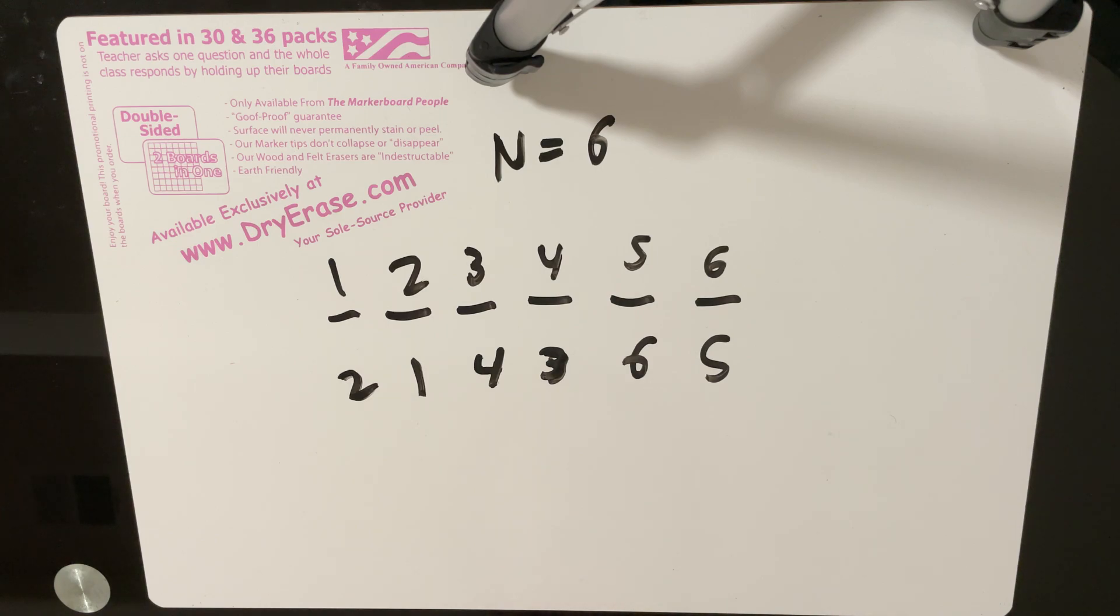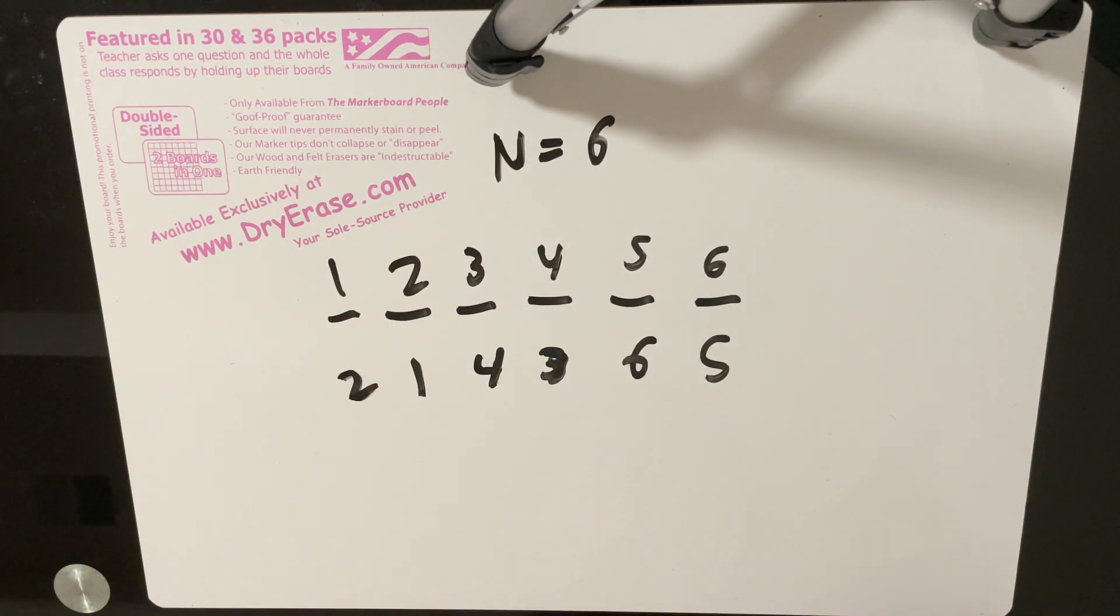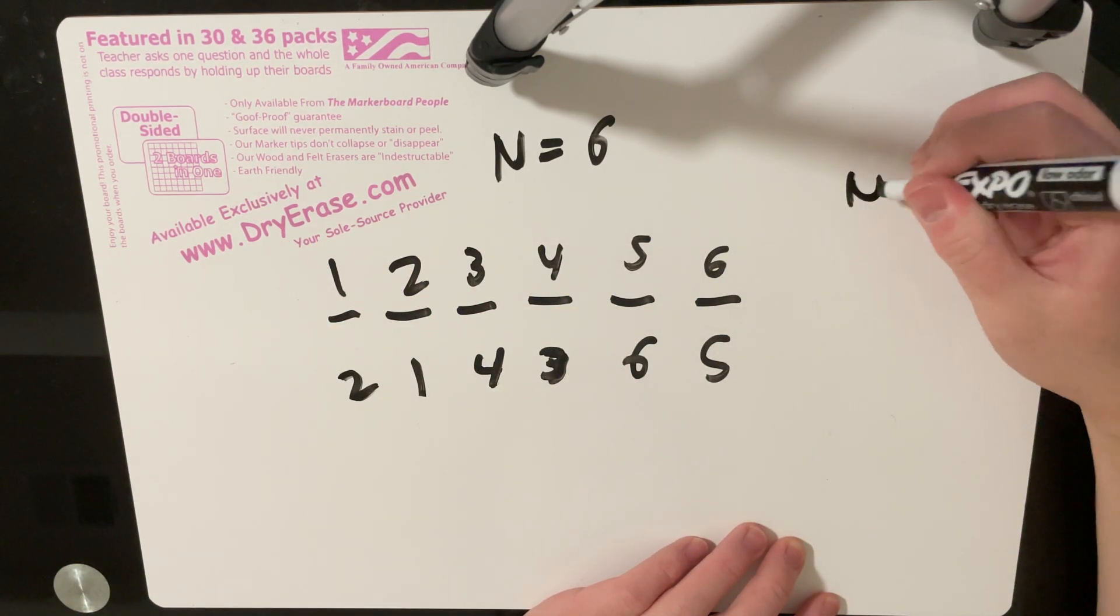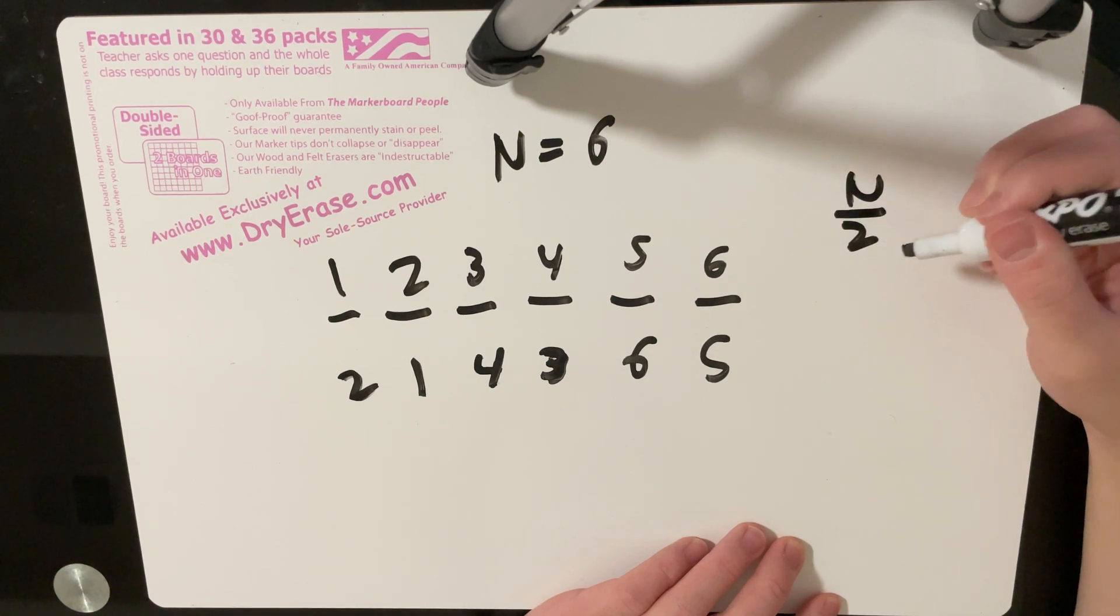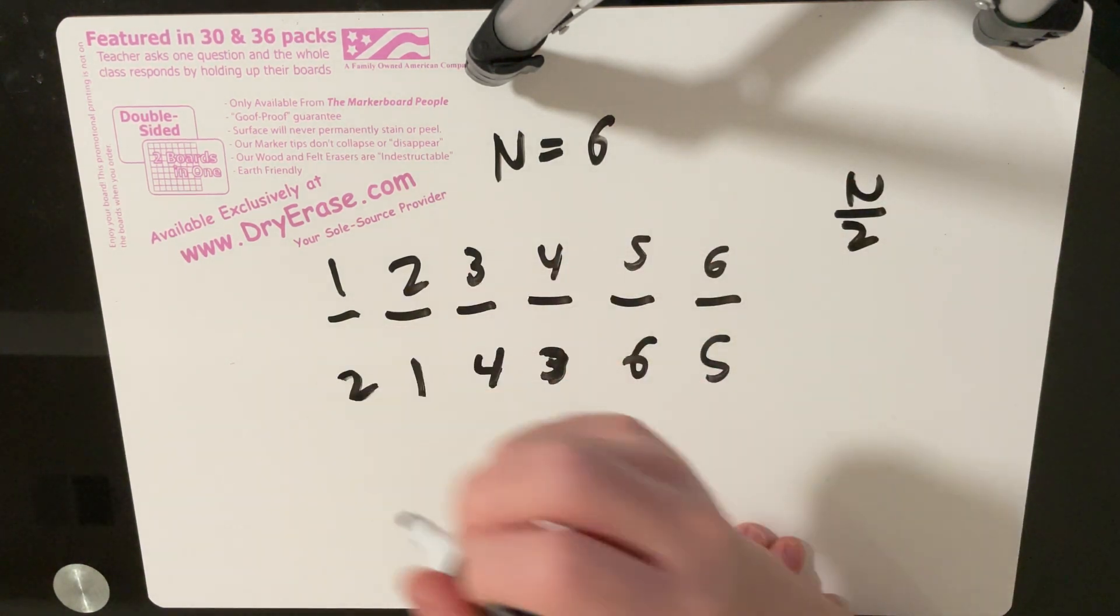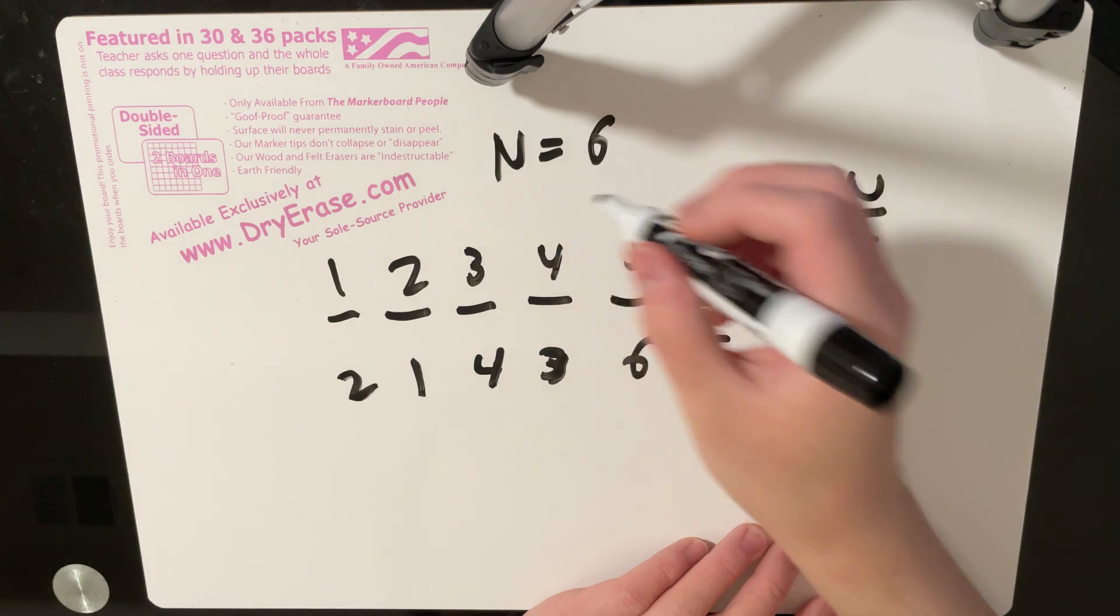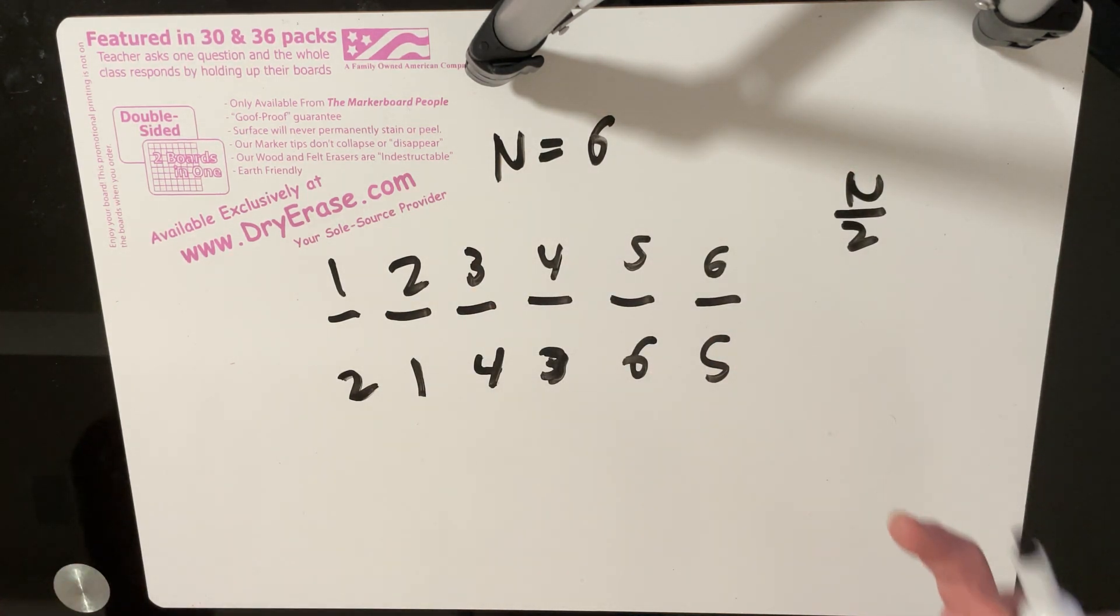And the reason why is because when you do one move, it can change at most two numbers. And because we need to change up to six numbers, we need to use at least n over two moves. And in this case, we used exactly n over two moves. So that's why this is the best way to do it.